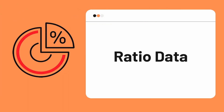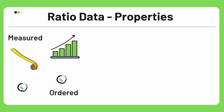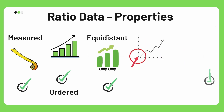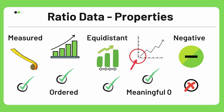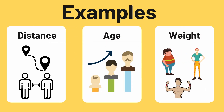Now moving on to the other type, which is ratio data. To understand ratio data, let's see its distinct properties. First, it is measured in the form of numbers — for example, you can easily measure distance with any measuring device. Second, it has rank and order — while measuring distances, 2 km is always less than 5 km. Third, it is equidistant, meaning it has equally spaced intervals — the difference between 1 km and 2 km is the same as the difference between 4 km and 5 km. Fourth, the distinguishing feature of ratio data is that it has a meaningful zero — for example, you can say that you have traveled 0 km today, meaning you have not traveled at all. Fifth, ratio data can never be negative — there is nothing like minus 5 km in distance. Some examples of ratio data are distance traveled, age of a person, and weight. All of these examples have a meaningful zero.